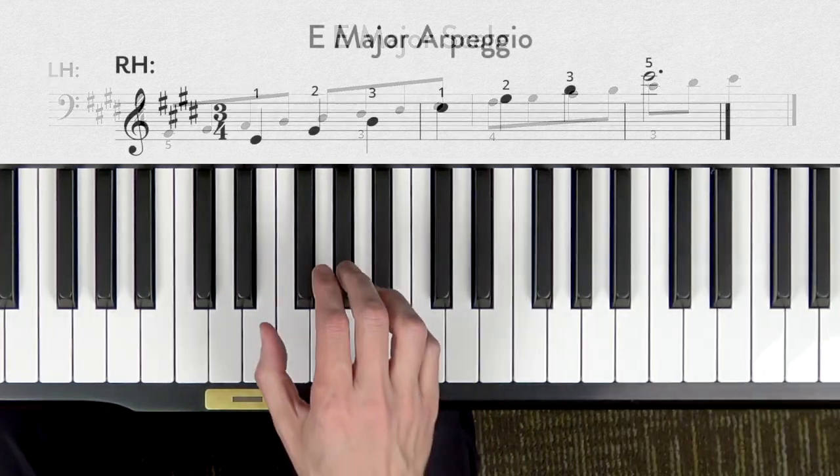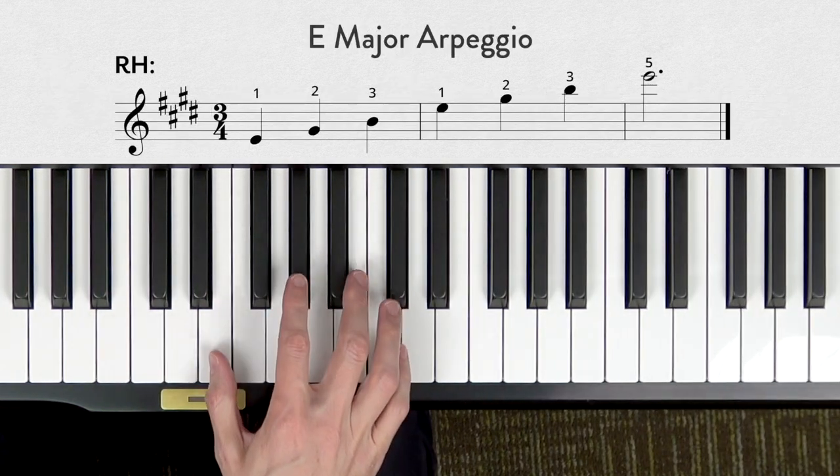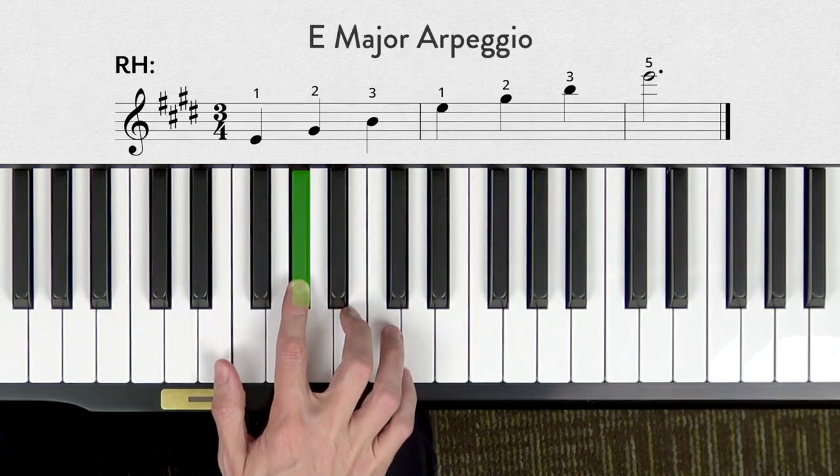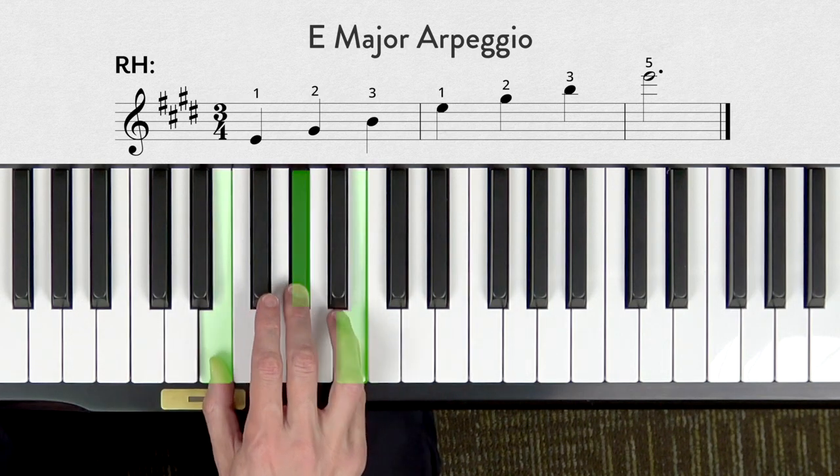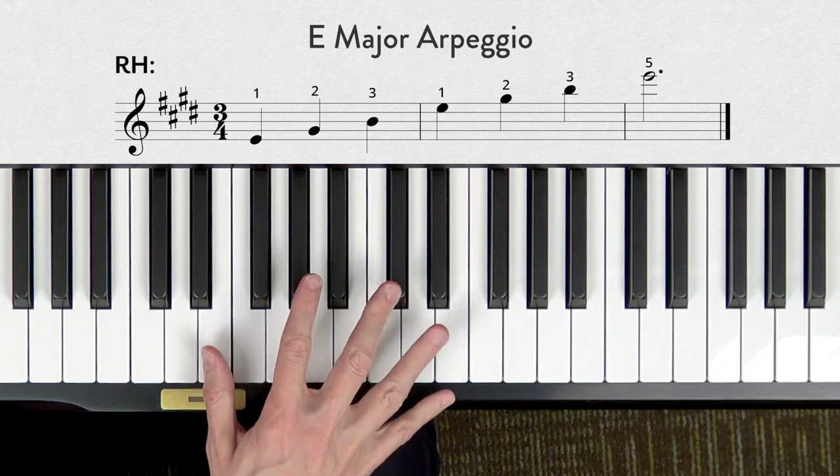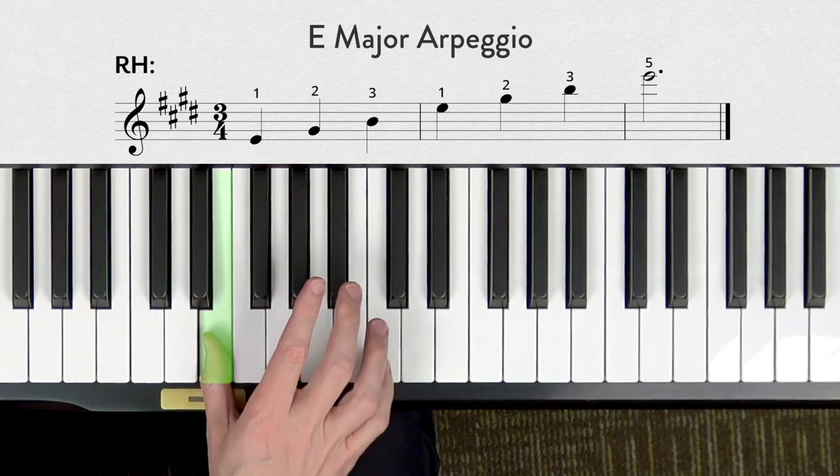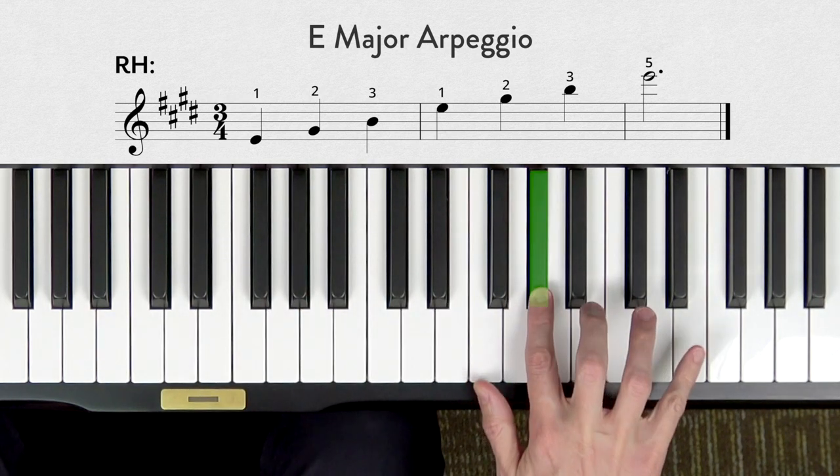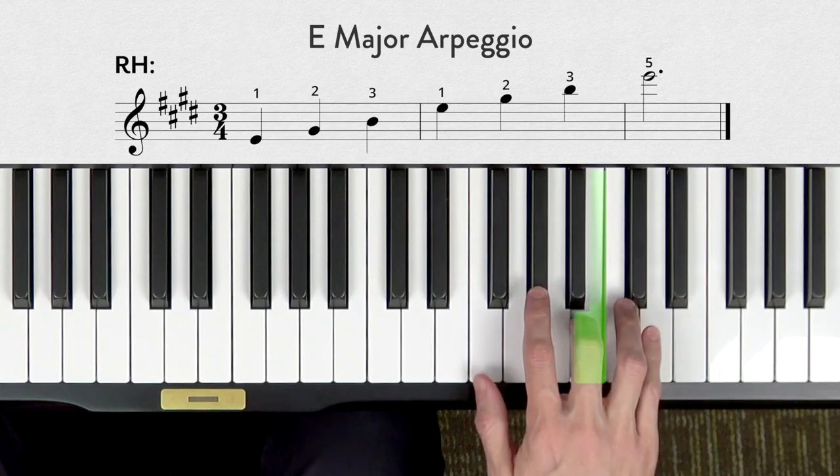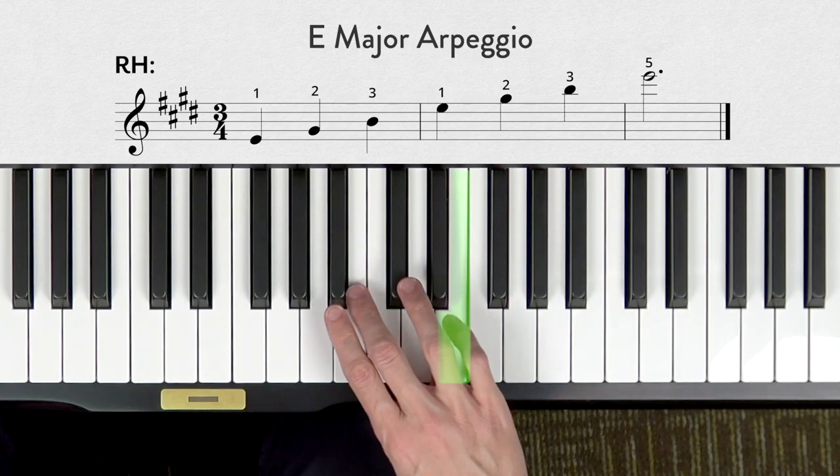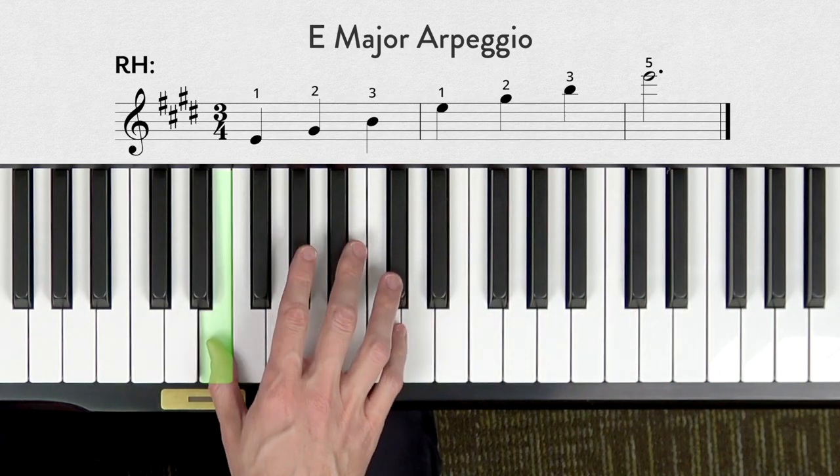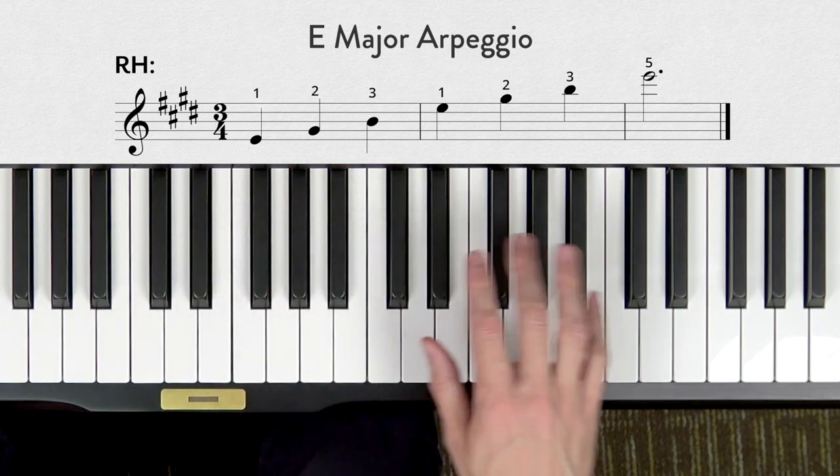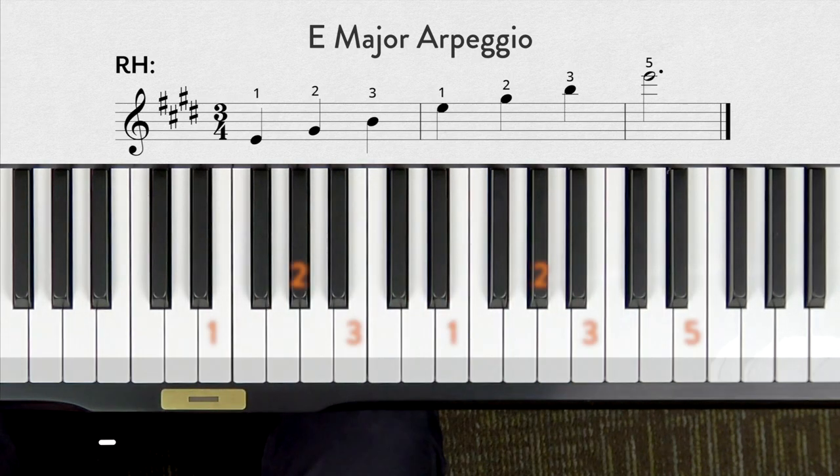Now let's do the arpeggio. The right hand uses the basic fingering 1 2 3. Remember we're just using an E major 1 chord, but we're stretching out a bit. 1 2 3, finger 1 comes under 1 2 3 5 3 2 1 3 2 1. Pause to work on your right hand E major arpeggio, then press play to go on.